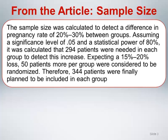Assuming a significance level of 0.05 and a statistical power of 80%, it was calculated that 294 patients were needed in each group to detect this increase. Expecting a 15 to 20% loss, 50 patients more per group were considered to be randomized. Therefore, 344 patients were finally planned to be included in each group.